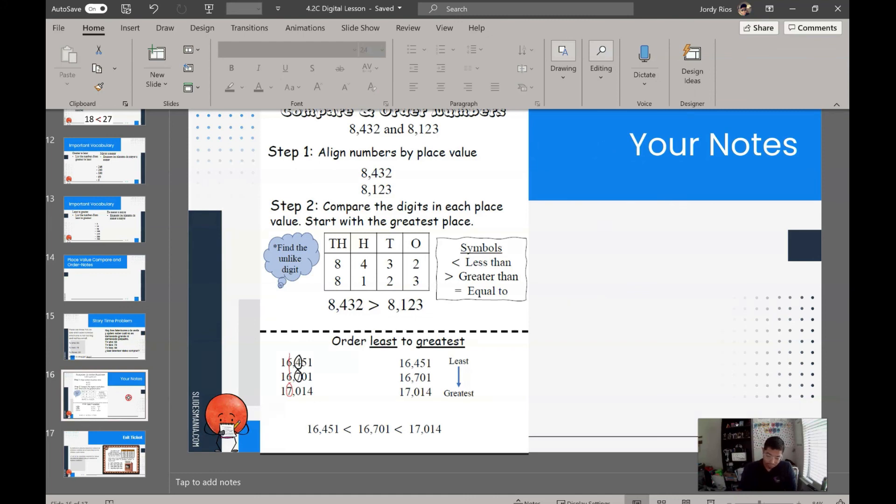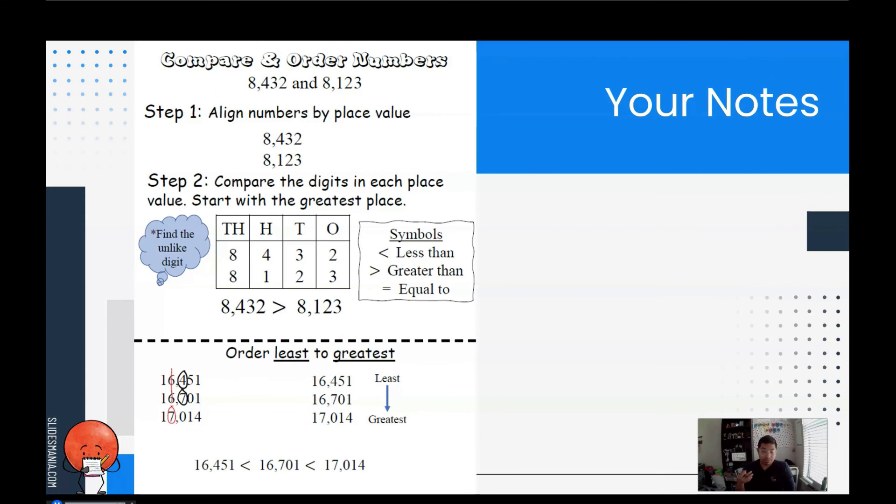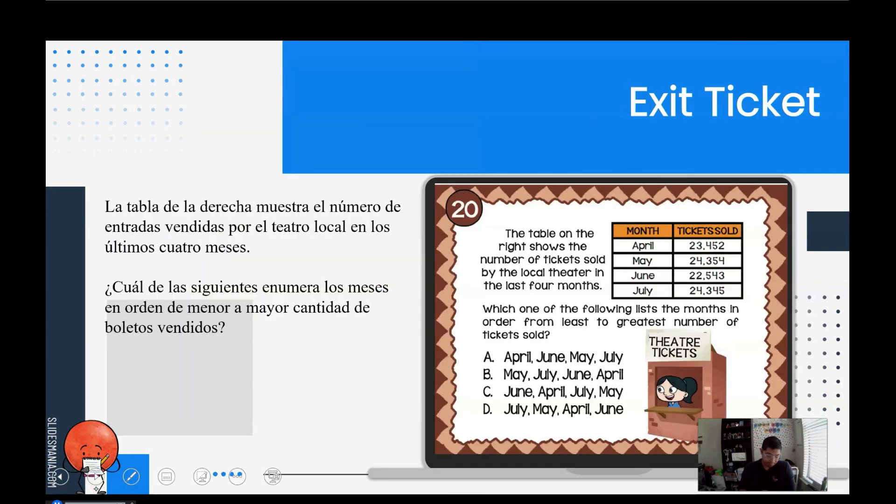Here are your notes. Make sure you copy them. Aquí están tus notas. Por favor escríbenlos en tu libreta. Here are your notes. Please go ahead and write them down in your notebook. And here is your exit ticket. The table on the right shows the number of tickets sold by the local theater in the last four months. Which of the following lists the months in order from least to the largest number of tickets sold? La tabla de la derecha muestra el número de entradas vendidas por el teatro local en los últimos cuatro meses. ¿Cuál de las siguientes listas de los meses en orden de menor a mayor cantidad de boletas vendidos? Vas a escribir esta pregunta en tu libreta y lo vas a contestar. You're going to write down this exit ticket in your notebook and you're going to answer it.